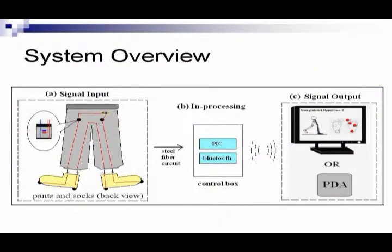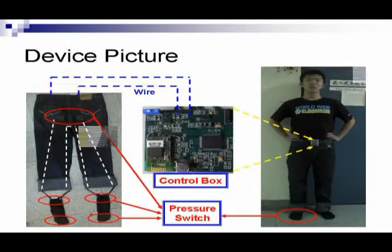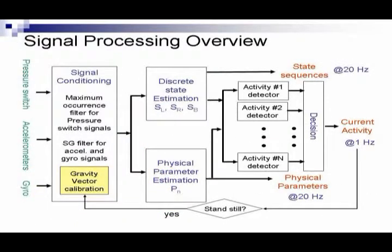Our system contains a pair of socks and a pant which have pressure switch sensors on them, and one control box tied on the waist. The control box includes an accelerometer, gyroscope, SD card storage, and Bluetooth module.